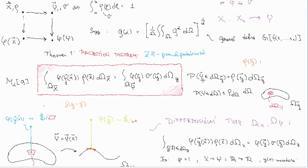Because the probability of event y happening in the d(omega_y) region — there is a picture — you have the omega_y region, and this part is d(omega). The probability of this happening is rho, the density at this point, times the actual size of this region. So this is the definition of rho·d(omega) within the probability itself.